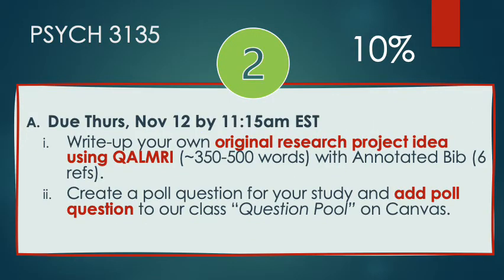Part two — this is the second prelim. Instead of a second prelim or midterm, we're going to have a research project. It's in two parts, but the first part is this midterm part. So on Thursday, November 12th, by 11:15 AM, please submit your own research project idea. This is going to be a QOMRI framework, about 350 to 500 words, with an annotated bibliography — six scholarly references: three supporting your hypothesis, three supporting the alternate hypothesis — and I'll post some APA style guidelines.